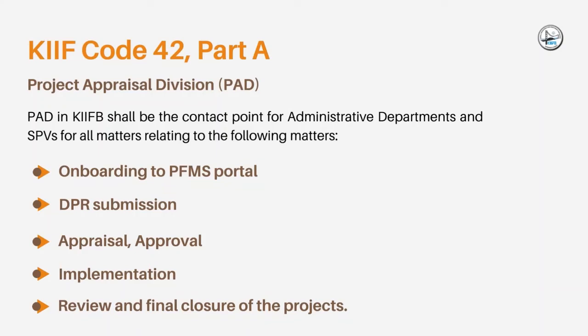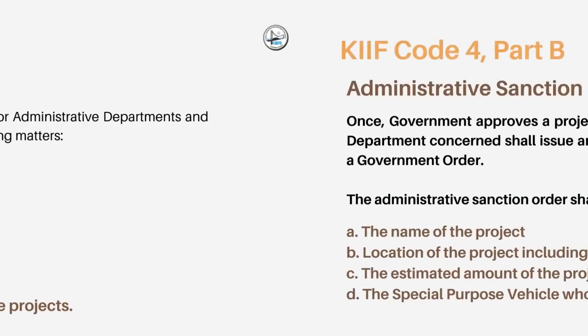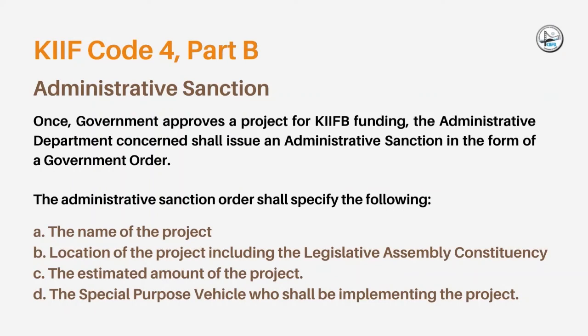Code 42, Part A mentions the Project Appraisal Division, PAD, in KIF-B, which is the contact point for Administrative Departments and SPVs for all matters relating to their onboarding to the PFMS portal, DPR submission, appraisal, approval, implementation, review, and final closure of the projects. As per Code 4, Part B, once the government approves the project for KIF-B funding, the Administrative Department concerned shall issue an Administrative Sanction in the form of a Government Order.